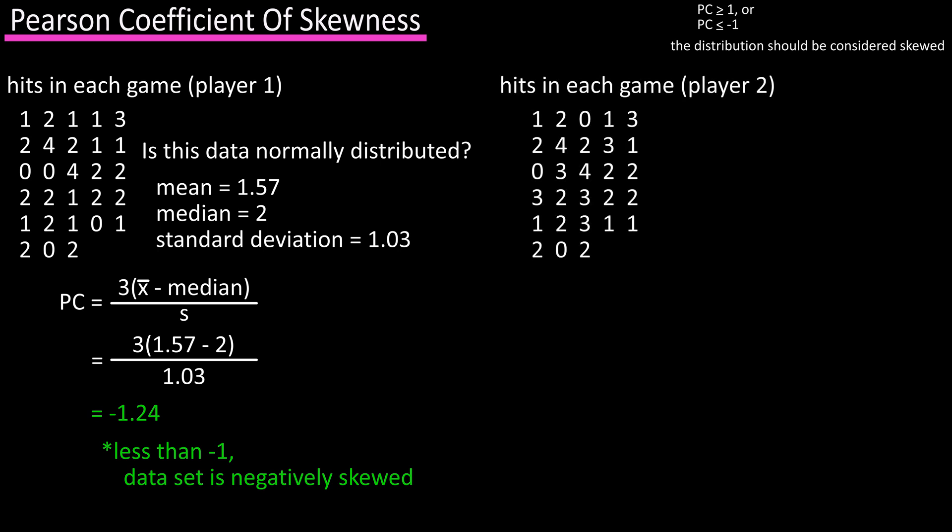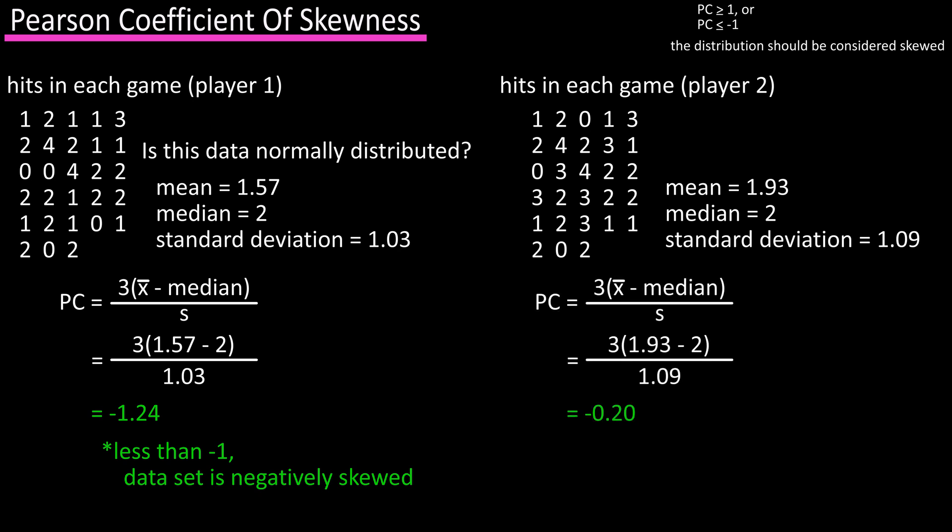Here is another player's hits for every game over the same one month period, with a mean of 1.93, a median of 2, and a standard deviation of 1.09. Using the formula we get a result of negative 0.20, which is within range for normality.